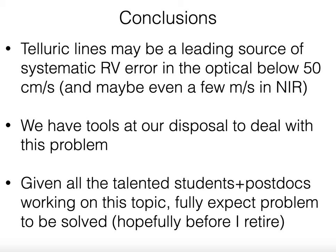In conclusion, telluric lines may be a leading source of systematic RV error in the optical once we go below 50 centimeters per second, and at least meters per second in some regions of the near-infrared. But we do have tools at our disposal. Given the talent of students and postdocs working on this topic—as reflected in many very recent references from 2018 to 2019—I fully expect this problem to be solved, hopefully before I retire. Thank you very much, and I'm happy to answer questions.